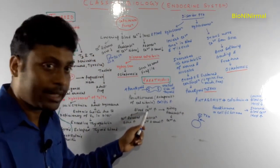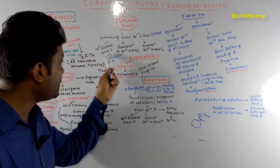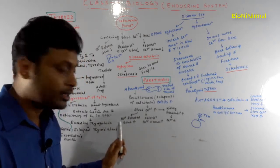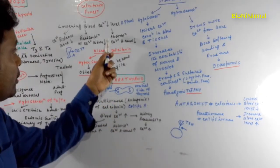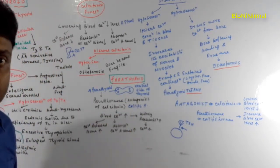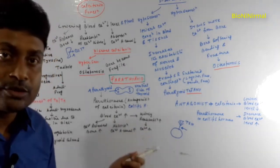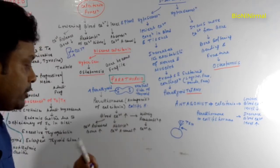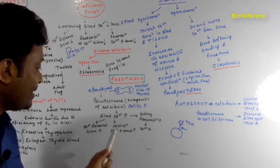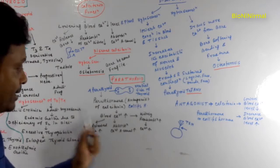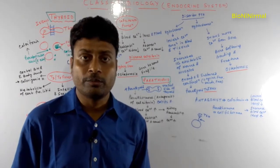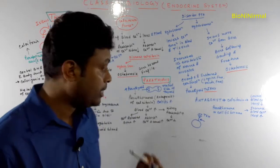Parathormone increases the blood calcium level: calcitonin lowers calcium release from the bone, but parathormone increases calcium release from the bone, so calcium enters the blood. Calcitonin lowers reabsorption of calcium from the kidney, but parathormone increases reabsorption of calcium from the kidney, so calcium enters the blood. Calcitonin lowers absorption of calcium from the alimentary canal, but parathormone increases absorption from the alimentary canal — and by this way parathormone increases the blood calcium level. So calcitonin and parathormone have opposite effects and are called antagonist hormones.